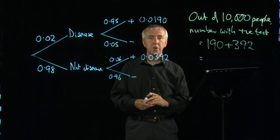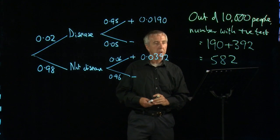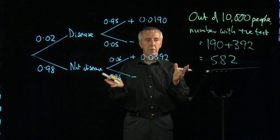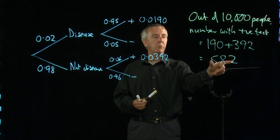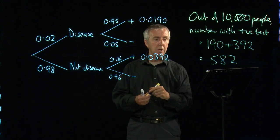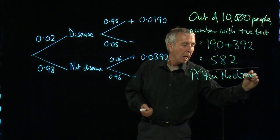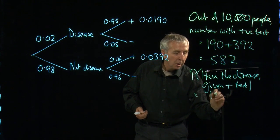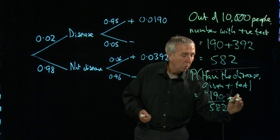And so the total number with positive test results is 582. So if you've gone to the doctor and you've had your test, you've got a positive result, do you worry? What's the probability that you've actually got the disease? Out of those 582, the number who actually have the disease is, in fact, just 190. So the probability that you have the disease given a positive test is actually 190 out of 582, which is roughly equal to a third.